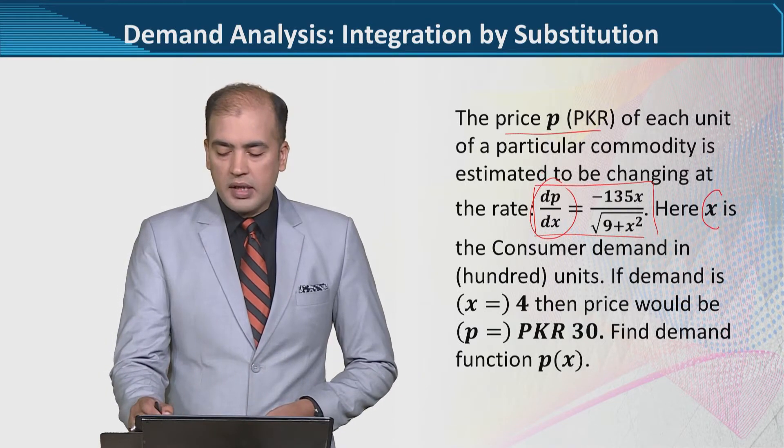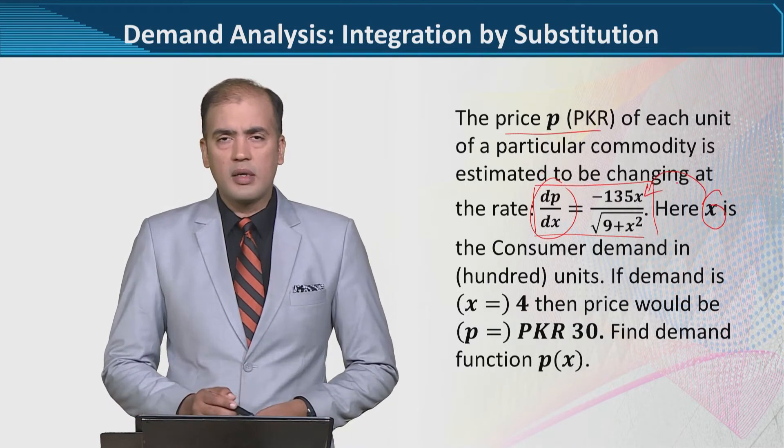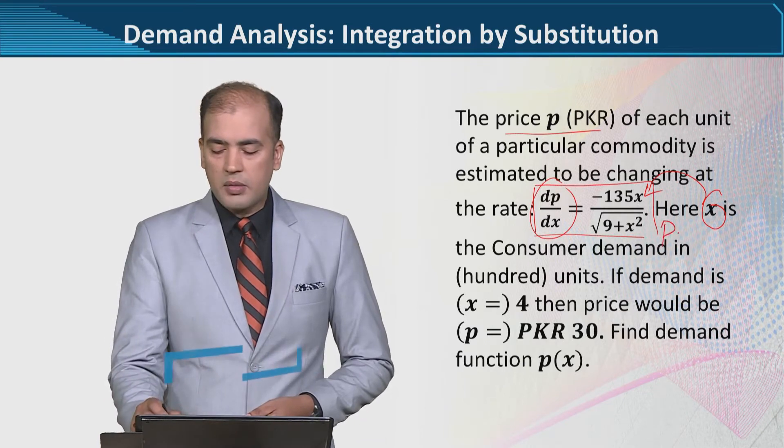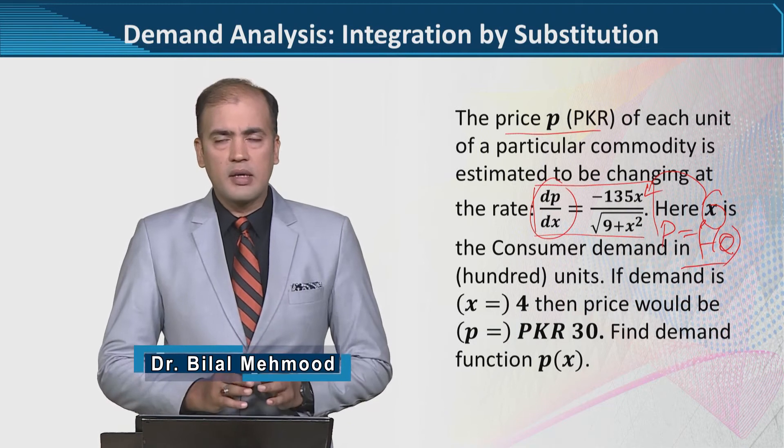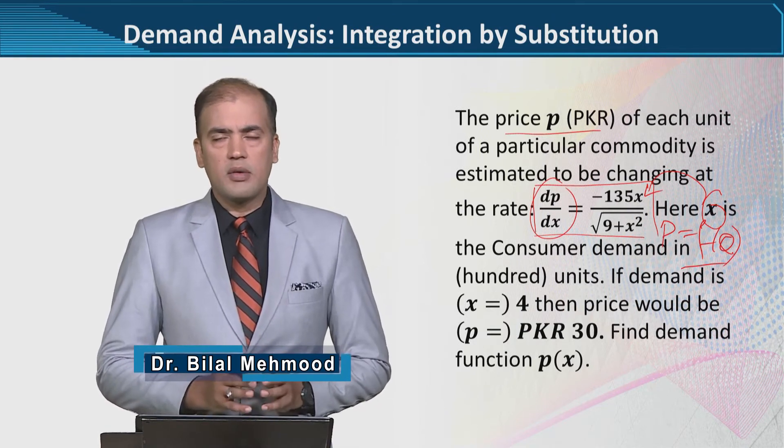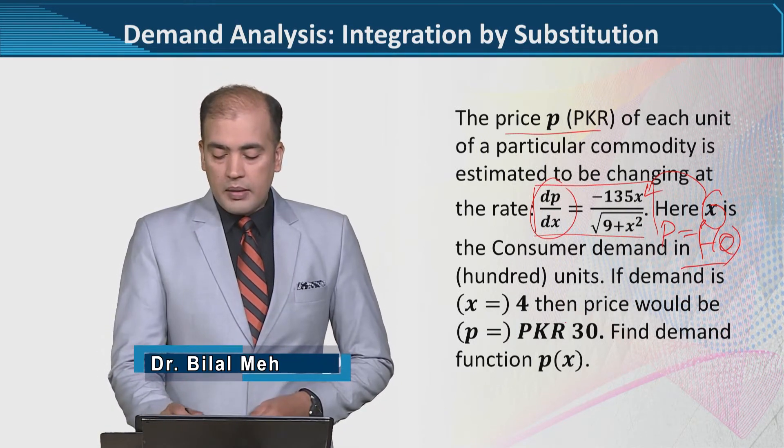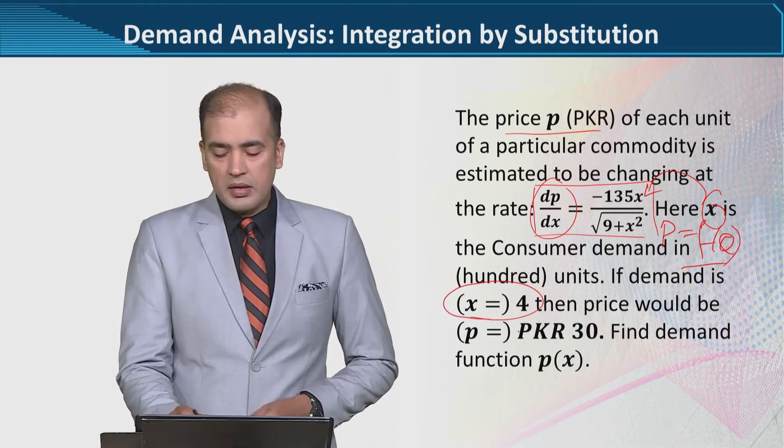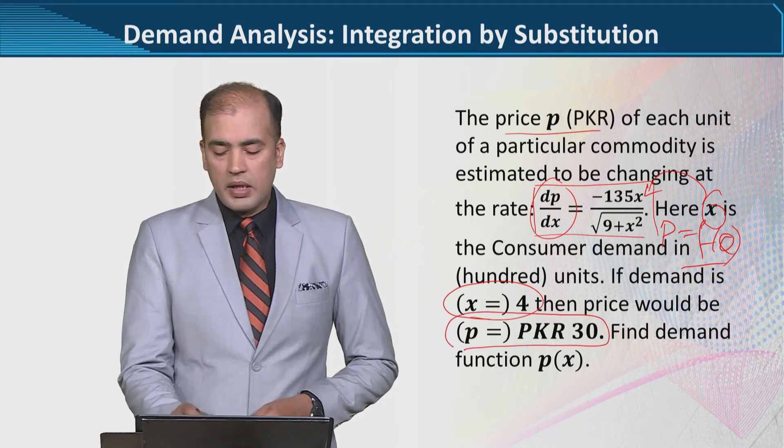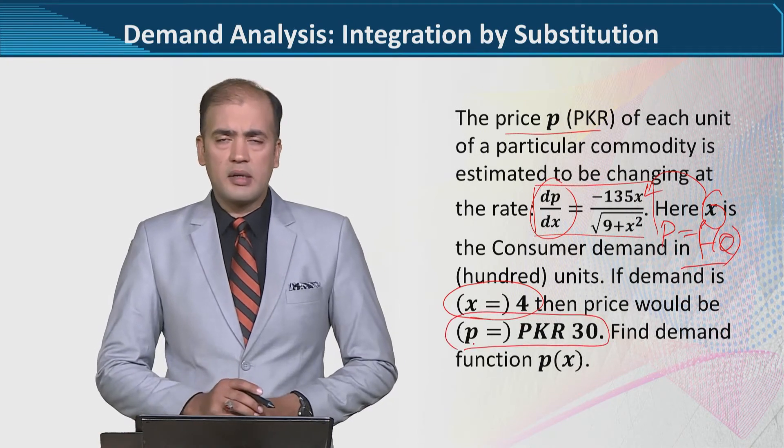The variable x shows the demand. So you see, this is the inverse demand function relationship, which we use to calculate the derivative and the rate of change of price. In addition, the given information is that if quantity demanded is 4, then the price is 30 units.